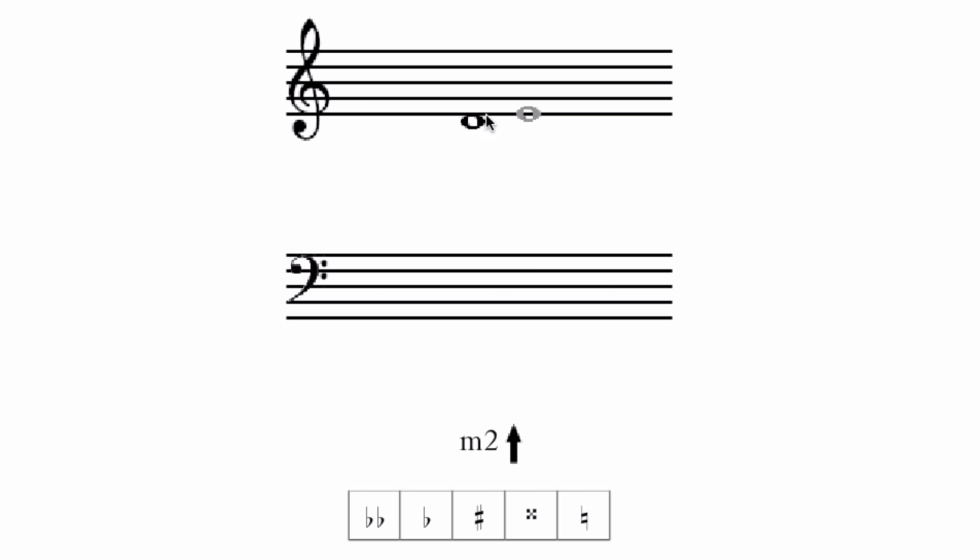Major 2nd, sorry, minor 2nd above, it needs to be not D to E, which is a whole step. It needs to be D to E flat to be a half step if it's going to be a minor 2nd.